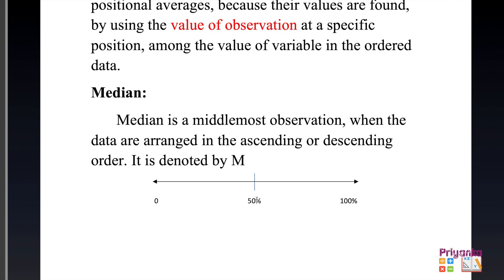Many times a question will not directly state what has to be found; they may give you some percentage which has to be found out. For that reason I have shown that median represents the center — that is, the 50% out of 100%.